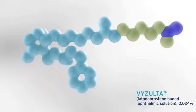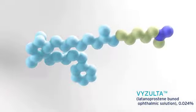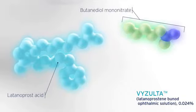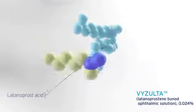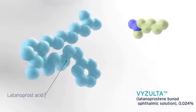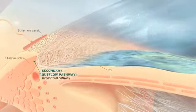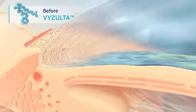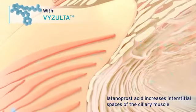Once in the eye, Visalta, or latanoprostine bunad, is metabolized into two moieties: latanoprost acid and butanediol mononitrate, which releases nitric oxide. The first moiety, latanoprost acid, is a prostaglandin analog. It primarily works within the uveoscleral pathway by increasing the interstitial spaces between the ciliary muscles to increase aqueous humor outflow.